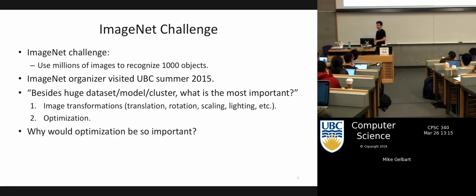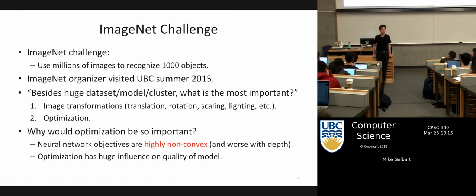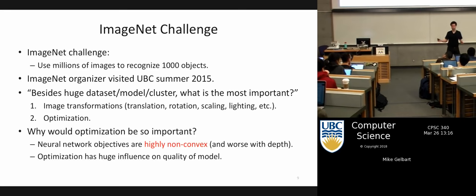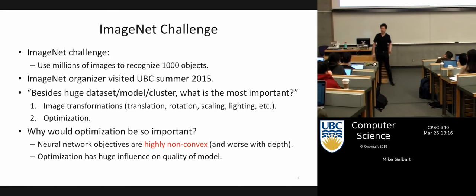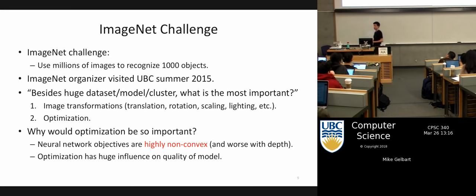With neural nets, the quality of optimization is kind of the reality. It comes back to this issue of non-convexity and a very high-dimensional situation. If you have 10,000 features, your logistic regression has 10,000 parameters. But if you have another layer of 10,000 latent features, you suddenly have 10 to the 8 parameters — a 10,000 by 10,000 matrix at the first layer. The numbers of parameters are much bigger than anything we've dealt with earlier in the course, which makes the optimization problem much harder. It's a very difficult search problem in potentially billions of dimensions.